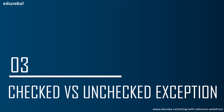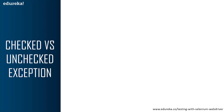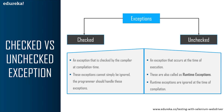Let's see the difference between checked versus unchecked exceptions. A checked exception is checked by the compiler at the time of compilation, while an unchecked exception occurs at the time of execution. Checked exceptions are called compile-time exceptions and unchecked exceptions are called runtime exceptions. Checked exceptions cannot simply be ignored — the programmer must handle them to maintain normal flow of execution. Runtime exceptions can be ignored without much difference in the flow of program execution.